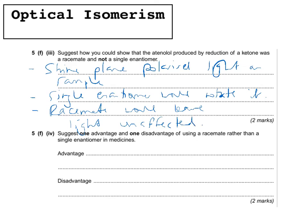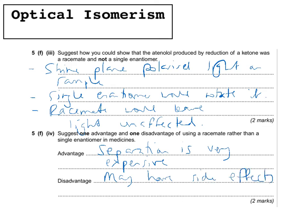Finally, suggest one advantage and one disadvantage of using a racemate rather than a single enantiomer in medicine. The advantage is that separation of enantiomers is very expensive, so using the racemate avoids that cost. The disadvantage is that the racemate may have side effects due to the other enantiomer present. I hope that has helped — please email me if you have any other problems with optical isomerism. Thank you.